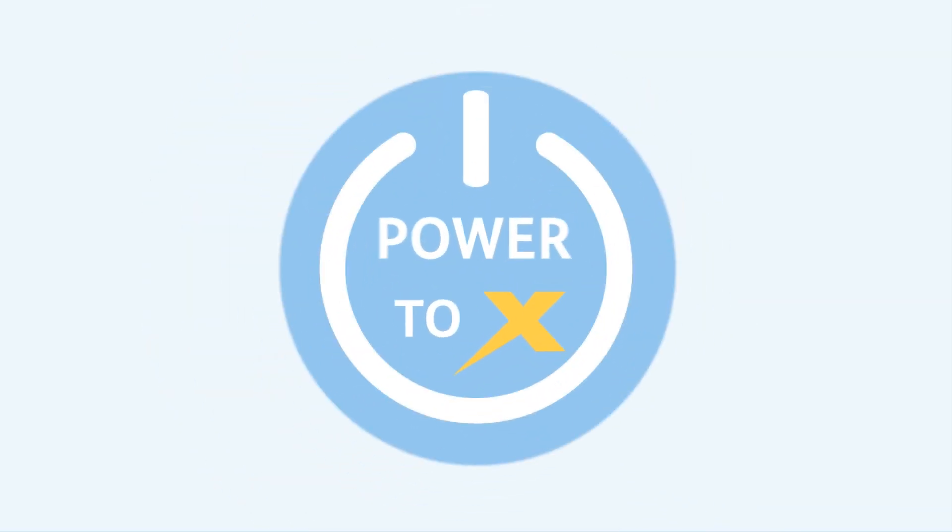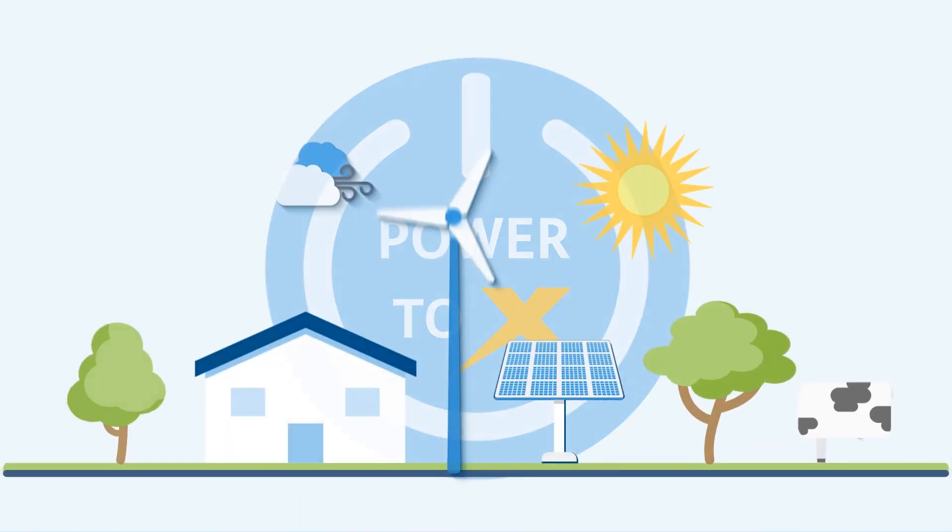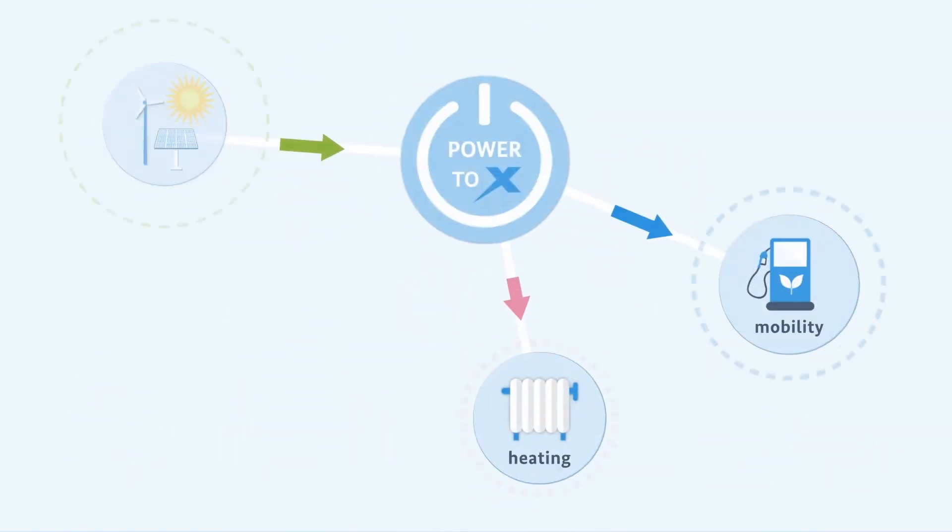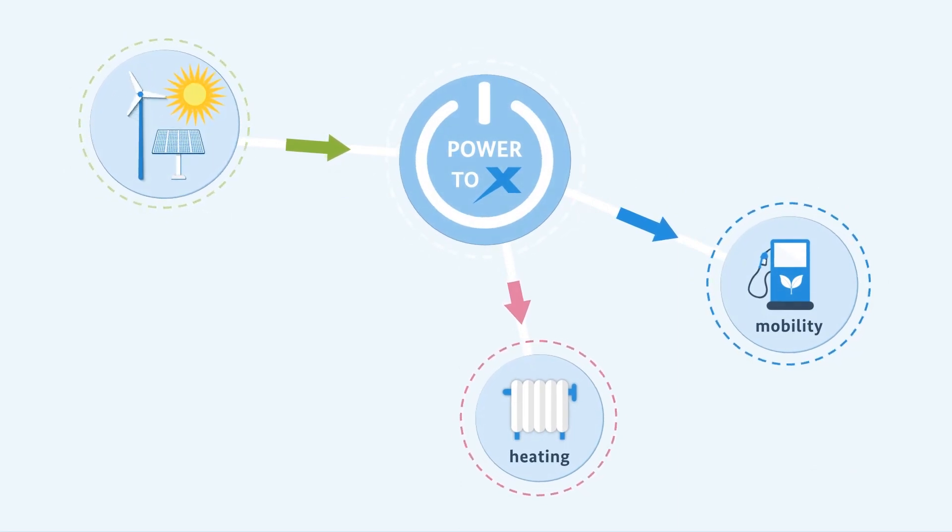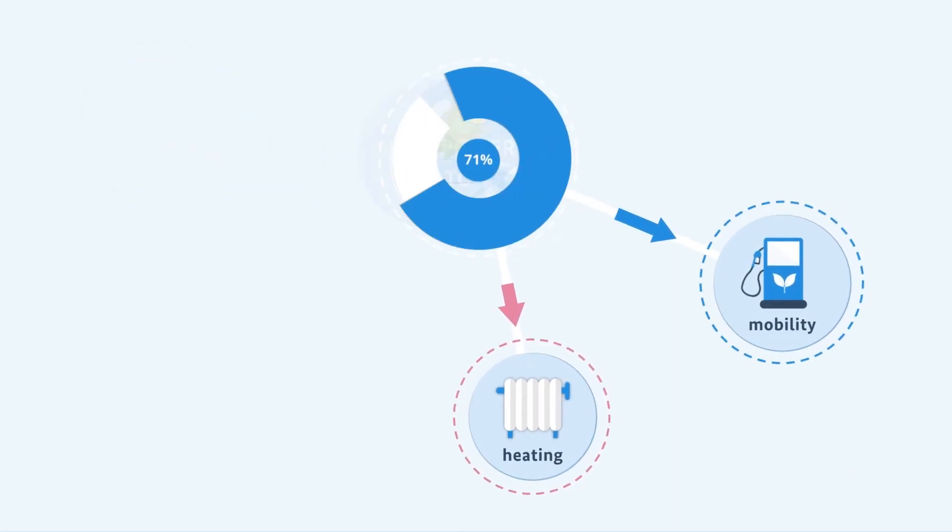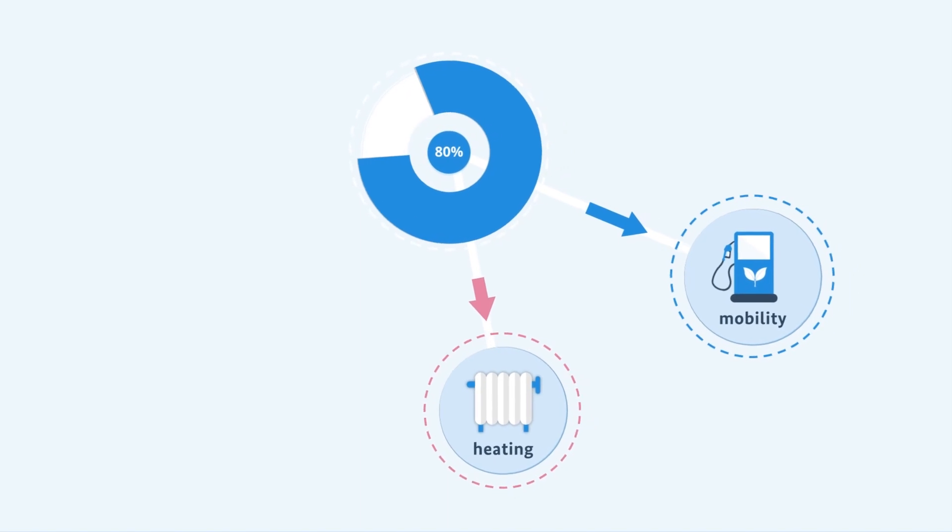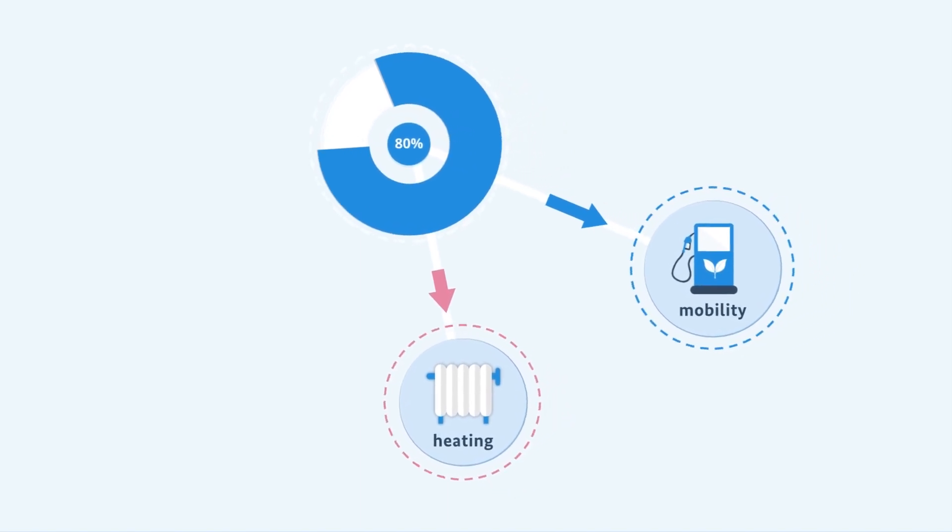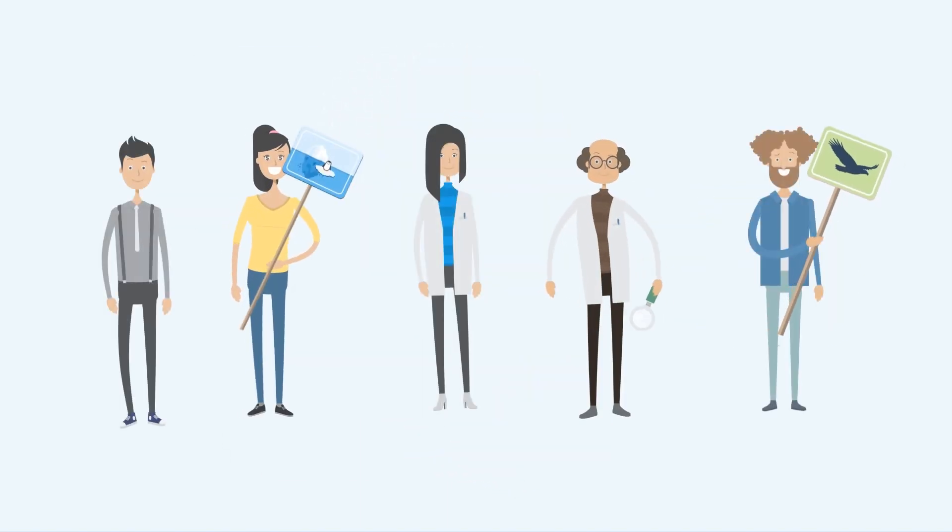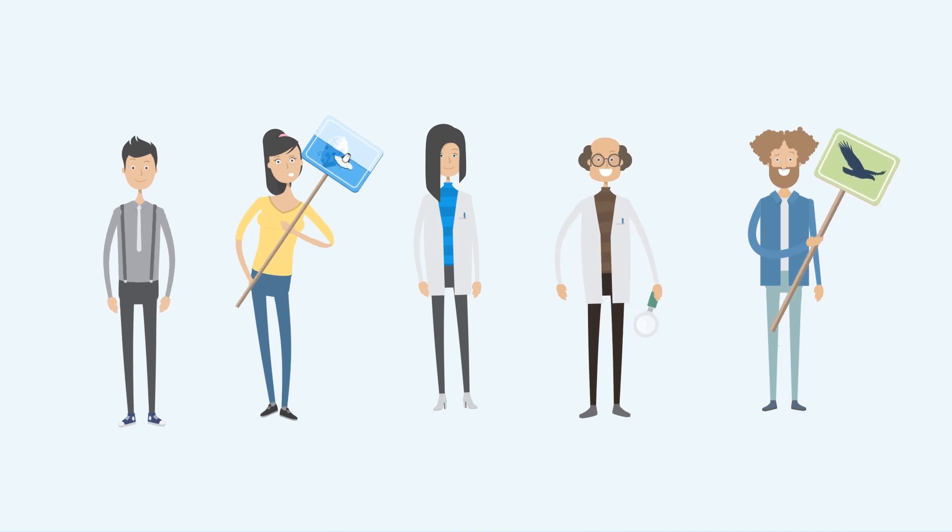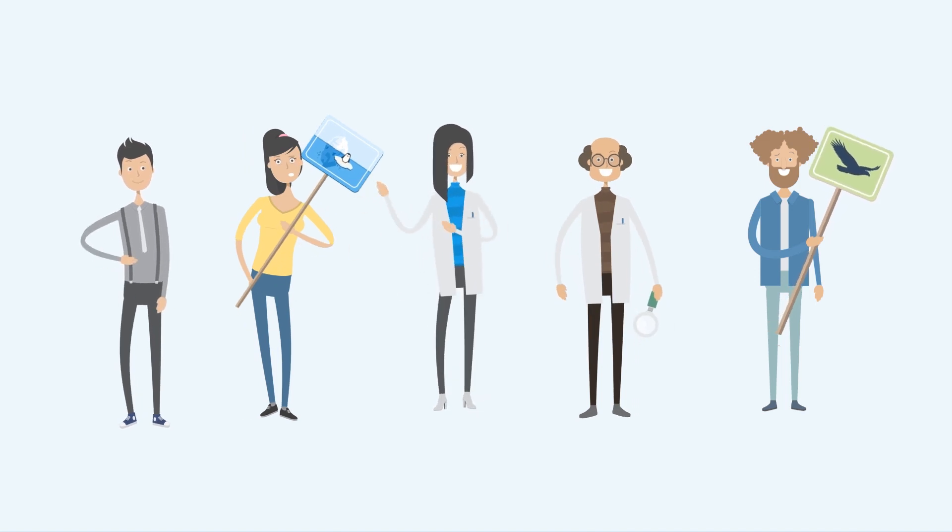Power2X is thus of exceptional importance for extending the use of wind and solar energy into the mobility and heating sectors, which together account for some 80% of energy consumption in Germany. Which solution is best is being debated by researchers, ecologists and climate protectors.